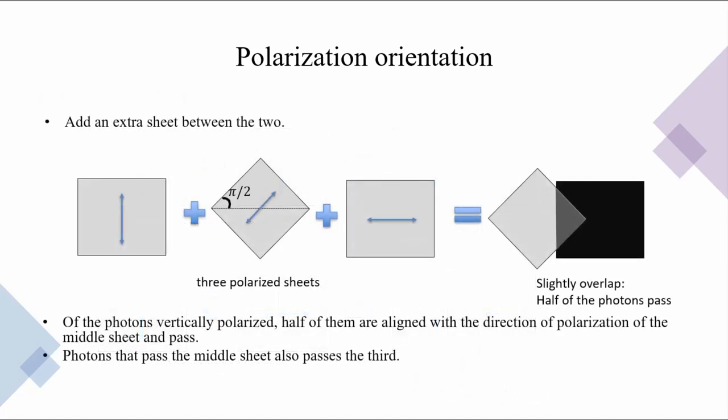Let us do something unusual now. Let us put an extra sheet between the two perpendicularly polarized sheets as shown in this slide, with the angle between them being 45 degrees. So we have three polarized sheets now. When we insert the third sheet between the two, we experience something very interesting: previously no light was passing through the two perpendicular polarized sheets, but now some light begins passing through all three sheets, even though we have added one more sheet.